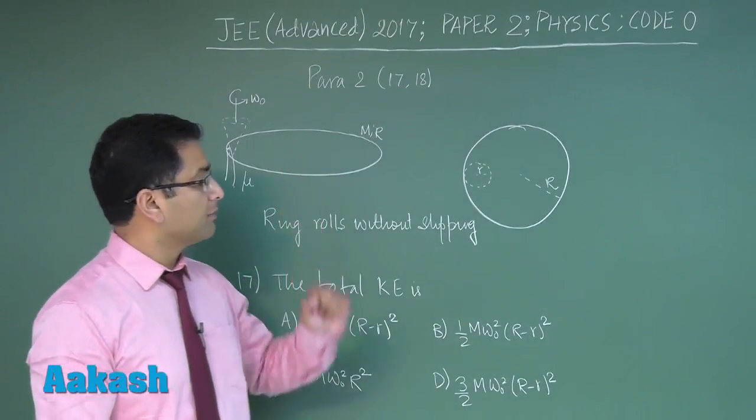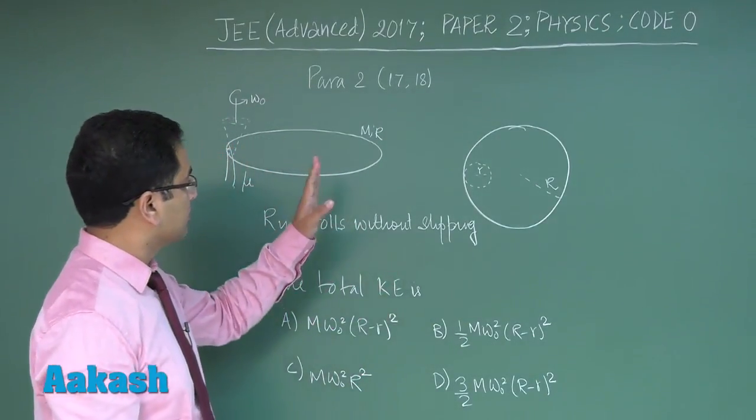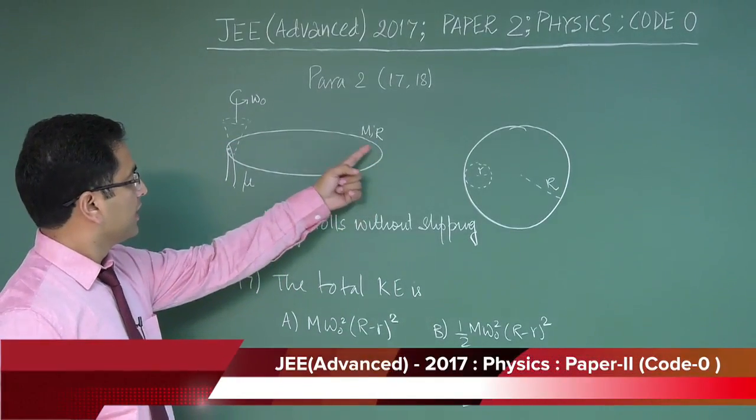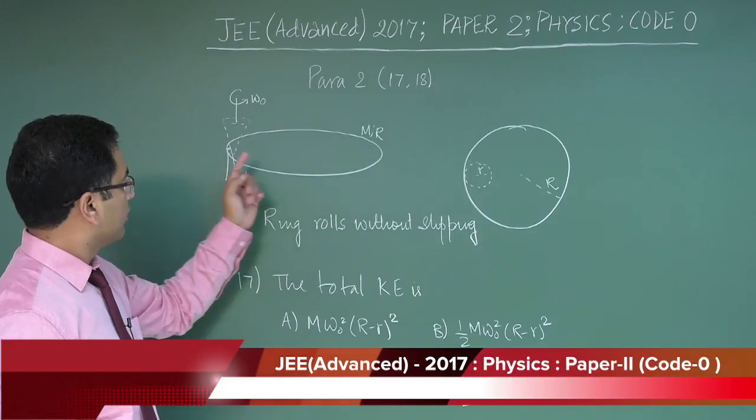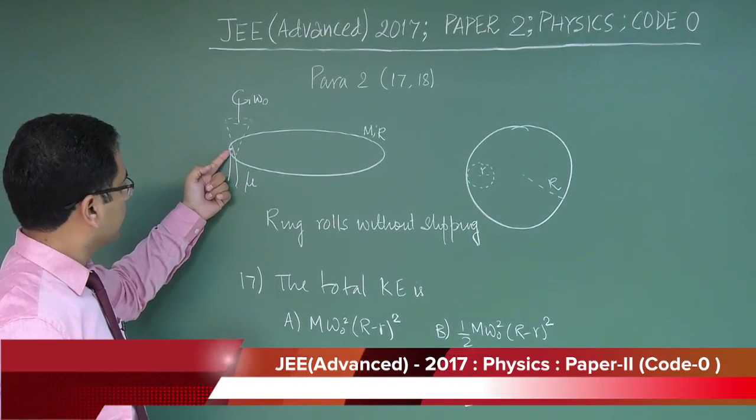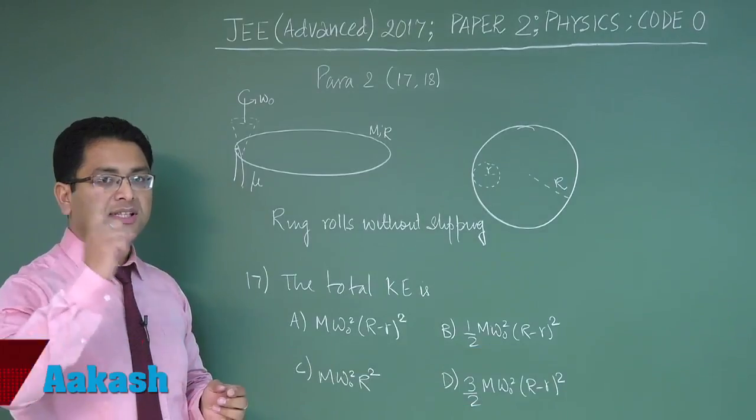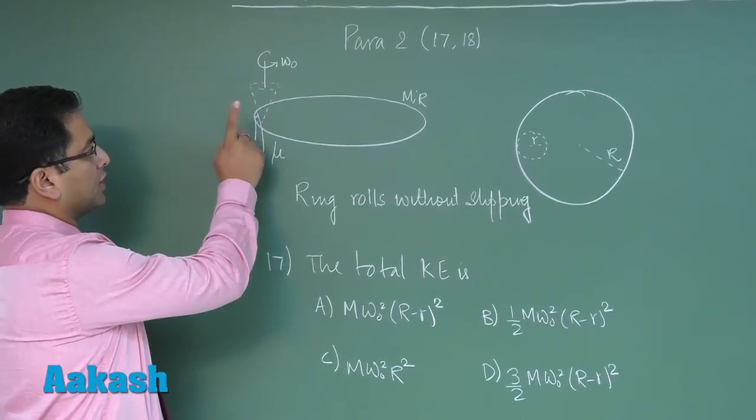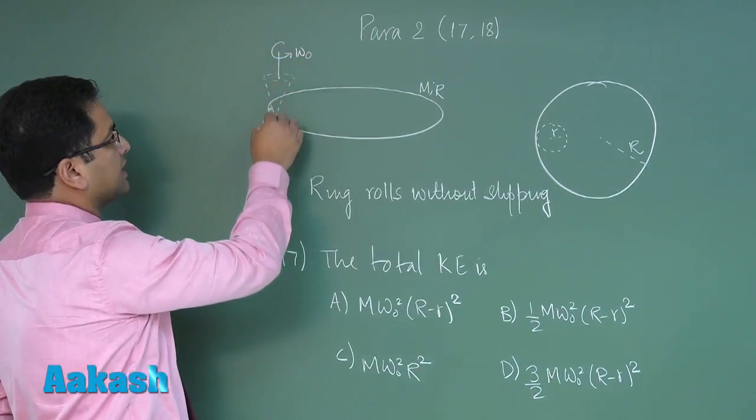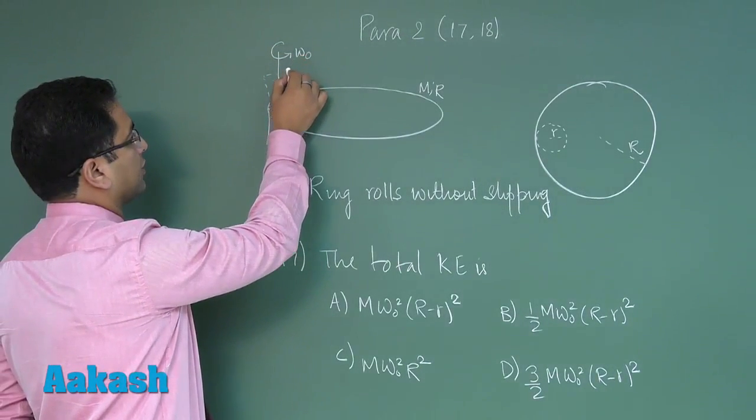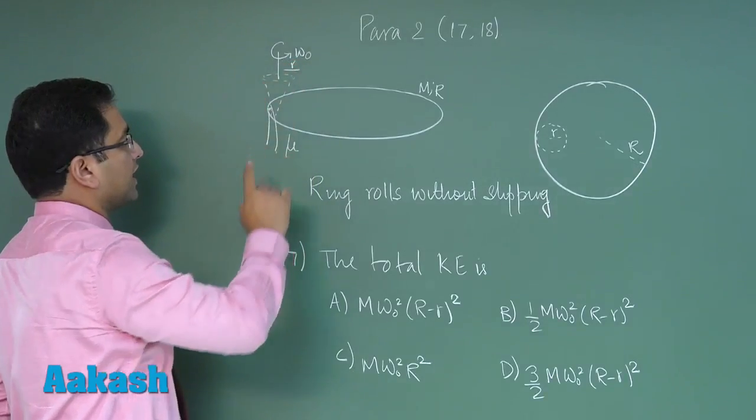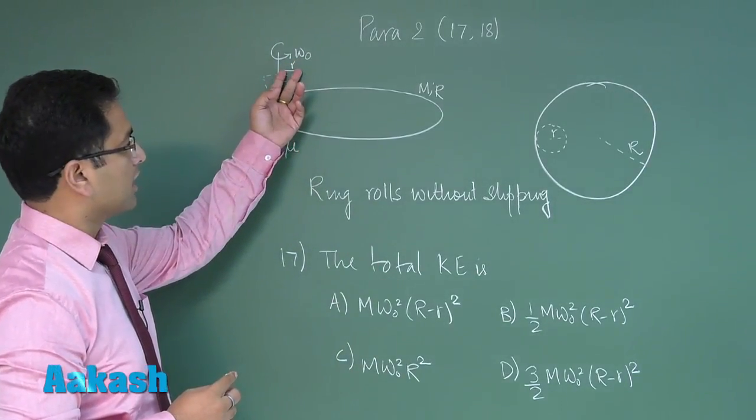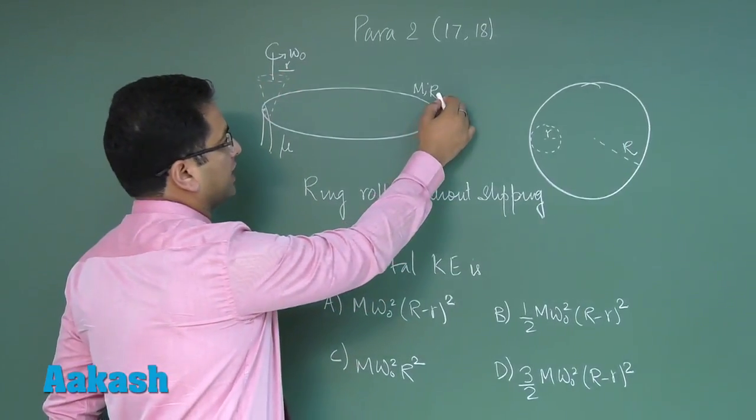All right, now the final paragraph which leads to question number 17 and 18. Let me explain: there is a ring and on one end a person puts his finger and twirls the ring in this manner. When the finger is twirled, the angular velocity of the finger is omega naught and the radius of the finger on which it forms a cone is small r, while the radius of the ring is capital R.